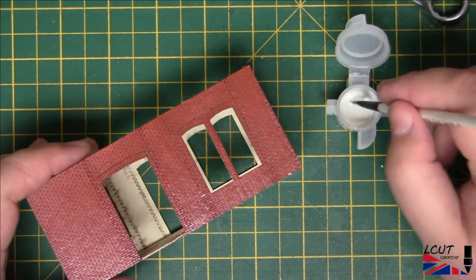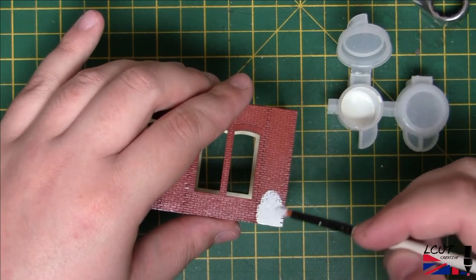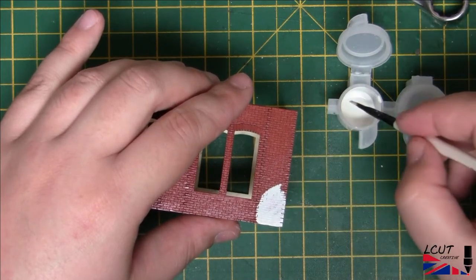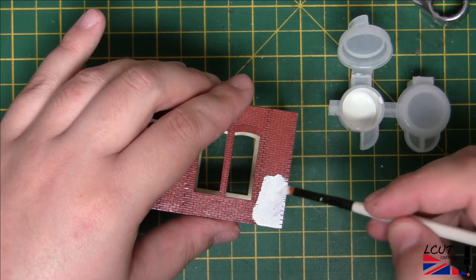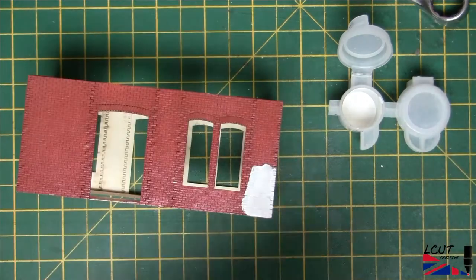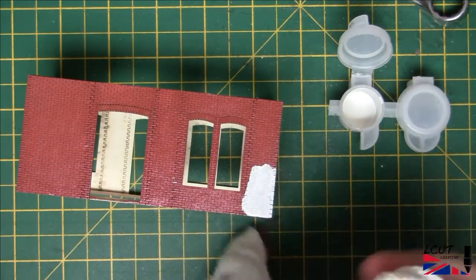After giving the varnish 24 hours to dry, use thick acrylic paint on a brush and work it into the mortar lines. Drying retarders are very useful here. The thicker the paint, the thicker the mortar line will come out.